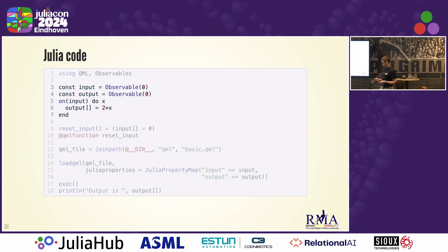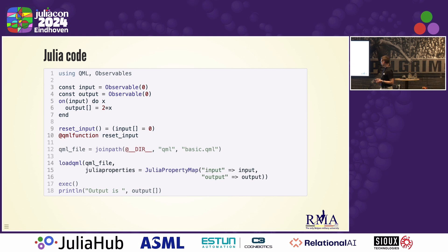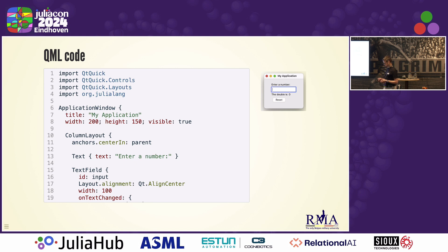Basically you write the Julia code where you have some observables — standard Julia observables — that you connect to the graphical user interface. You can also make functions available on the QML side using the addqml function macro. And then basically you just load the QML file, introduce the observables as properties, and in that sense you can make the GUI work.